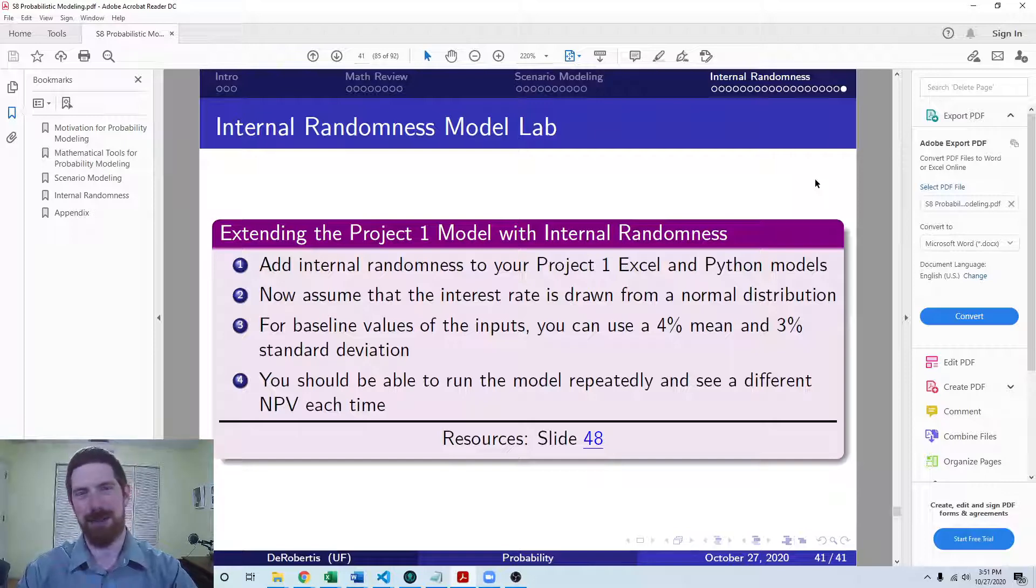Nowhere near as involved as the examples I just showed with adding internal randomness to Excel and Python. The interest rate is only used in the NPV calculation in this model, and that's all that has to change as a result of this.